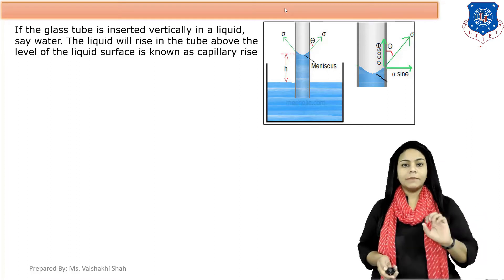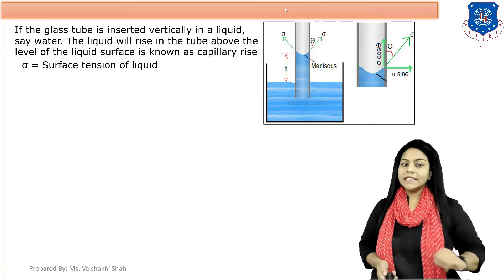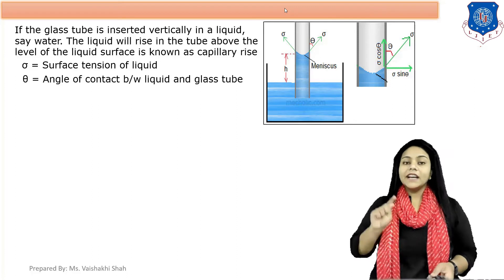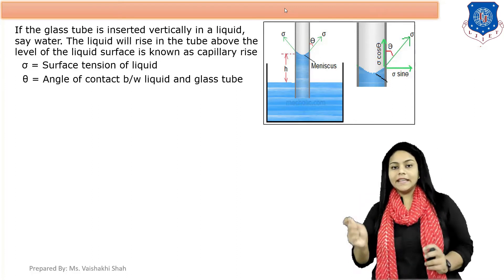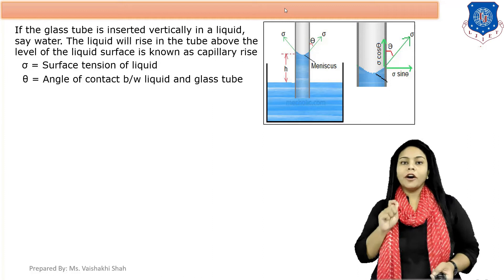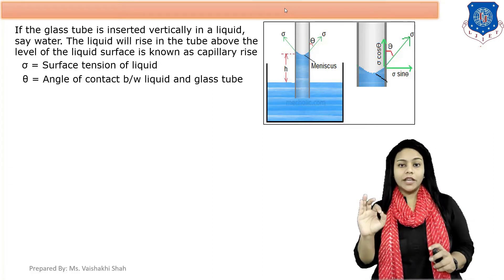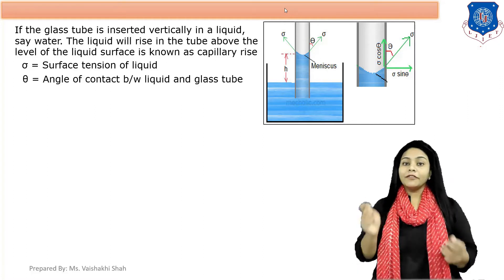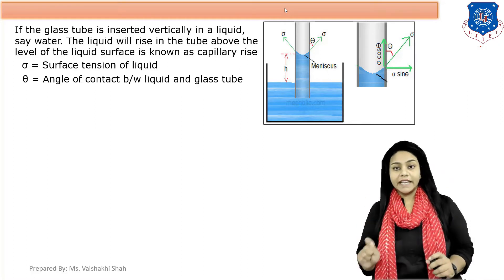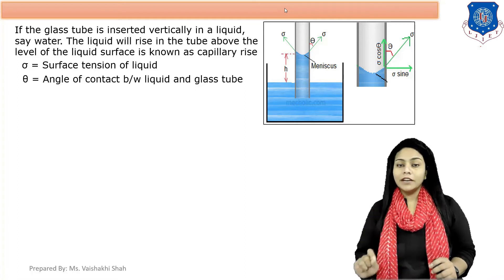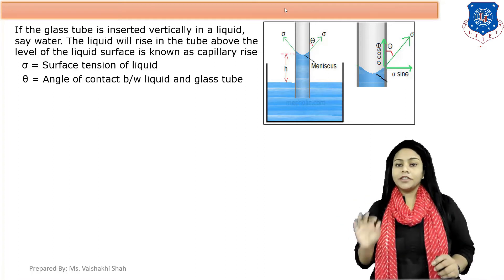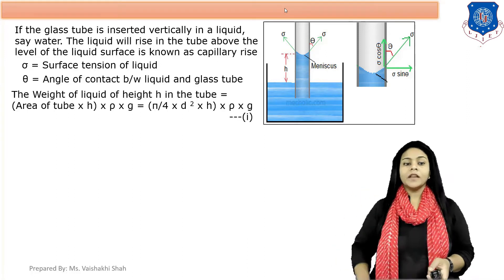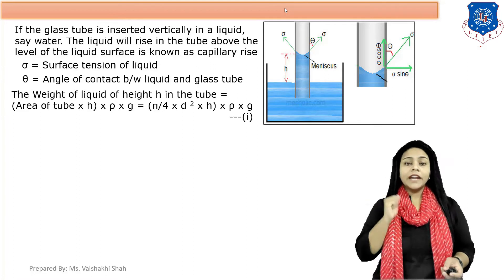Here Sigma is the surface tension of the liquid, and theta is the angle of contact between the liquid and the glass tube. For water we take theta = 0 degrees, and for mercury we take theta = 130 degrees. You have to remember these values for solving examples: theta for water is 0° and theta for mercury is 130°.